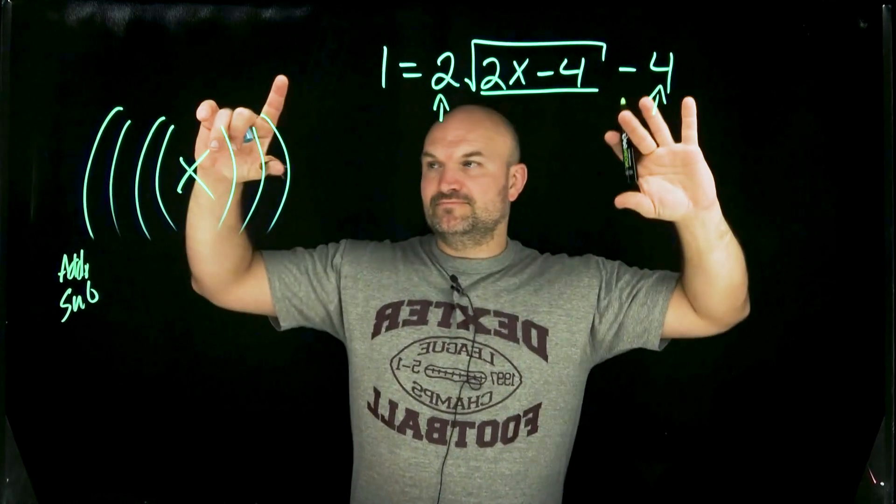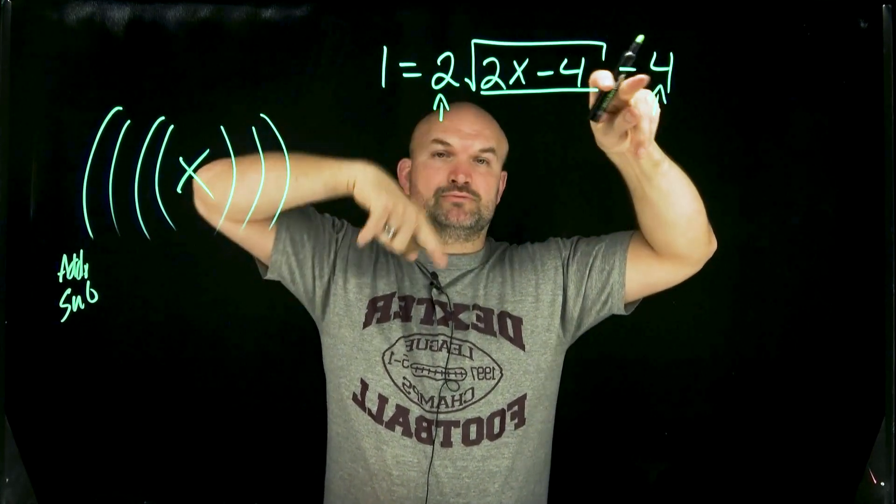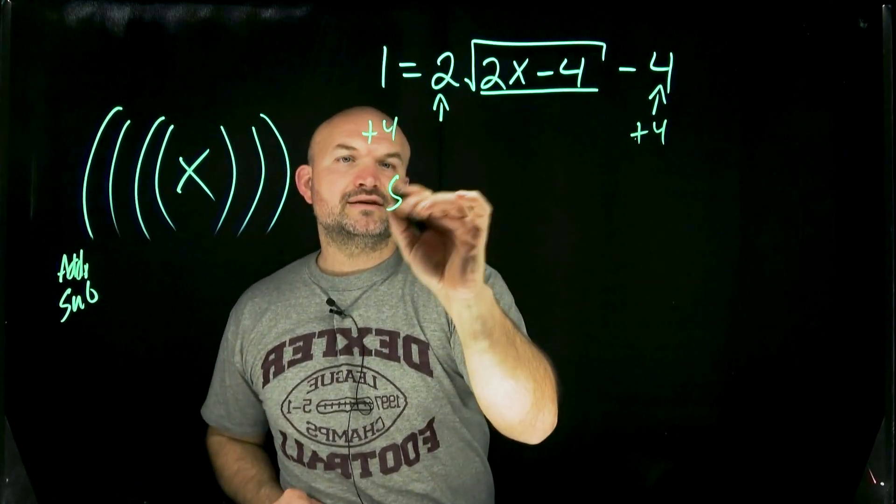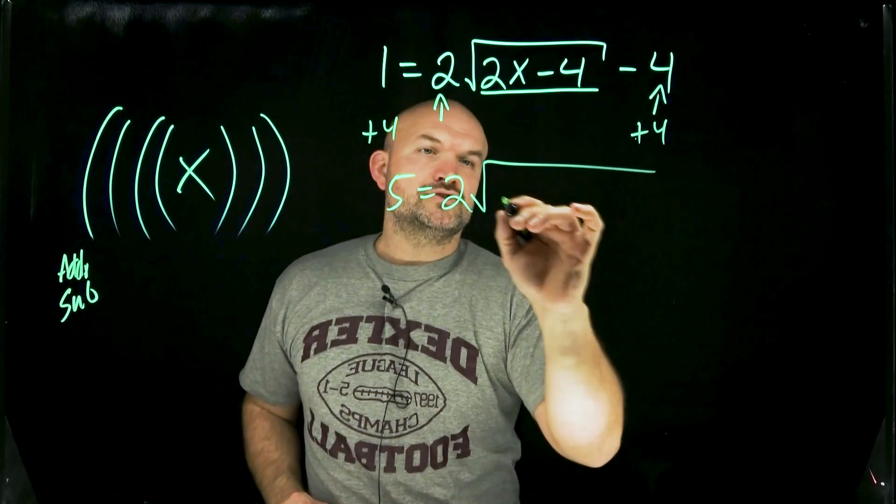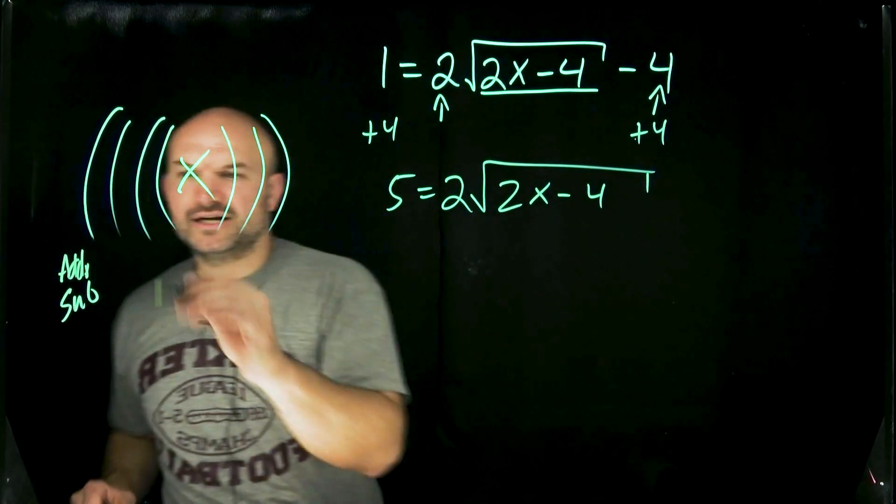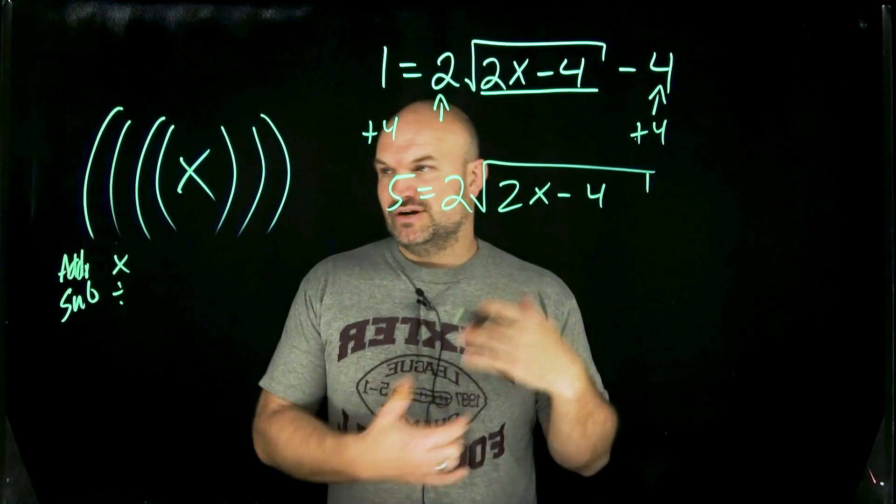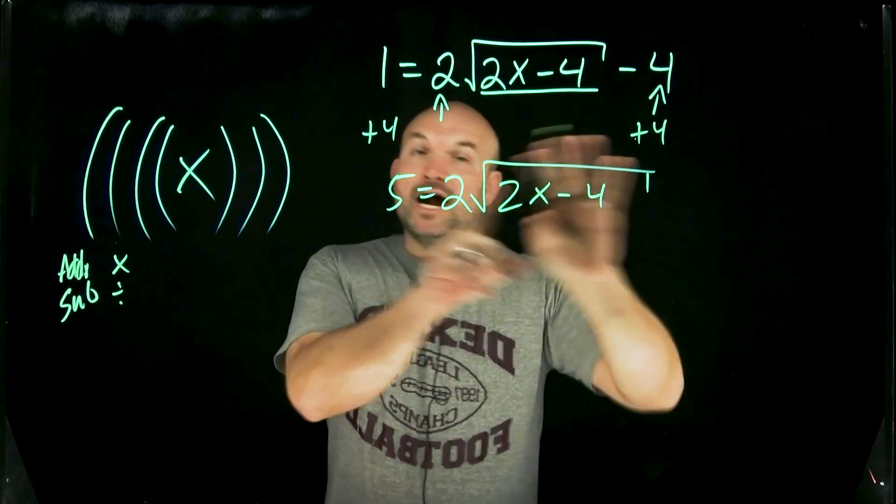So you can see the first layer here is we have subtraction of 4. So the first thing I'm going to do is add a 4 to both sides. So 5 equals 2 square root of 2x minus 4. Then the next layer is going to be multiplication or division. We want to see is there anything multiplying or dividing by our function?